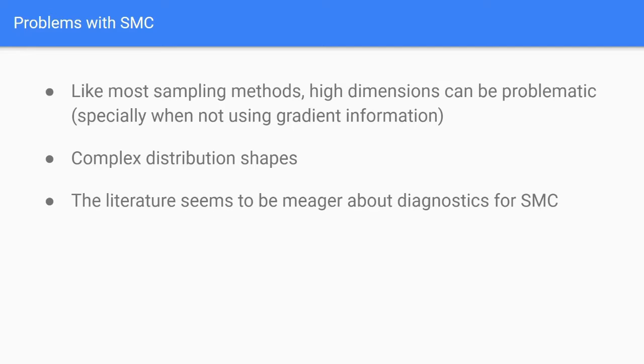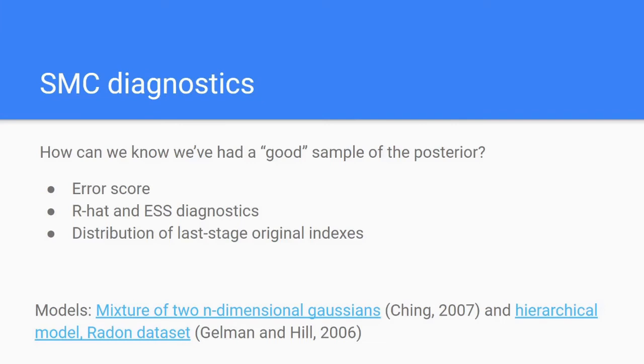For this reason, the next part of the presentation will focus on the diagnostics we've been using to evaluate different versions of SMC under various conditions. Moving into the diagnostics, what we want to answer is: How can we know we had a good sample of the posterior? For this we'll look at different diagnostic metrics such as the error score, R-hat and ESS diagnostics, and the distribution of last stage original indexes.